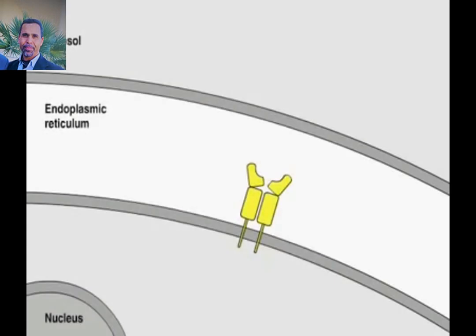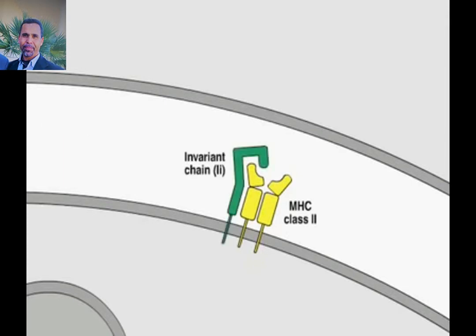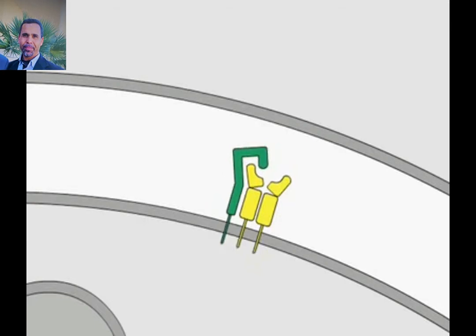The two chains of the MHC class 2 molecule assemble in the endoplasmic reticulum, the ER, with a third chain, the invariant chain, shown here in green. A portion of the invariant chain binds to the peptide-binding groove of the MHC class 2 molecule and prevents peptides or unfolded proteins present in the ER from binding.